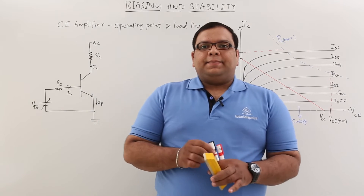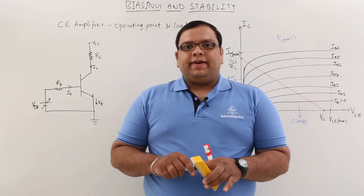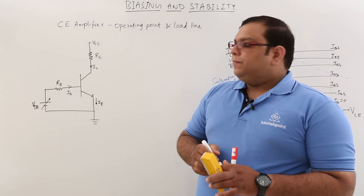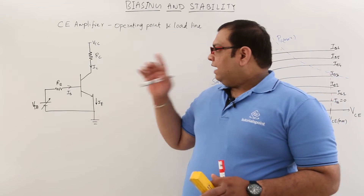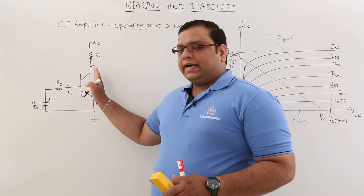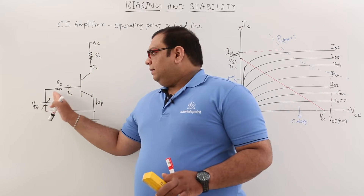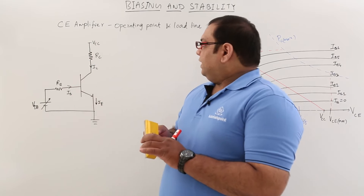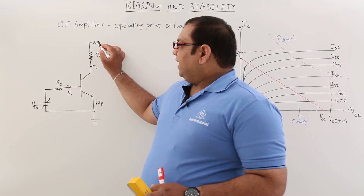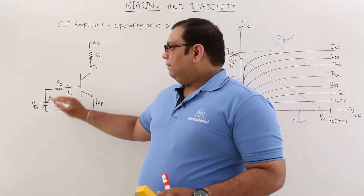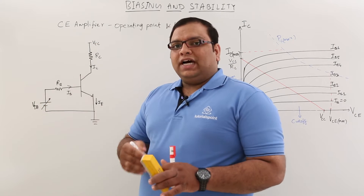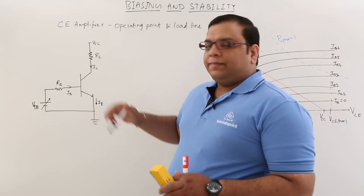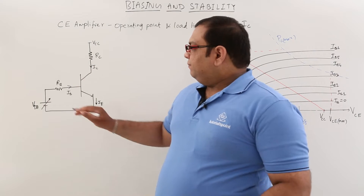In this class, let us discuss the CE amplifier, its operating point, and the load line concept. In this circuit, we have a CE amplifier connected with VBB (base voltage) and VCC (collector voltage). Normally we take VCC and VBB as variable to get the output characteristics of the transistor.